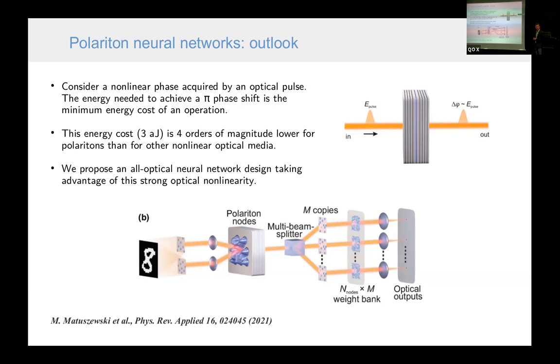Finally, I would like to say something about the outlook of polariton neural networks. To estimate what is the potential efficiency of the system, one can consider such a simple setup. We have an optical pulse with certain energy. It is going through microcavity and the polaritons provide some nonlinearity to this pulse. At the exit of the cavity, we have the same pulse, but there is some phase shift, which is dependent on the energy. This is a nonlinear effect. And if we can achieve a pi phase shift, it means that we can use this device to perform useful information. We can estimate that the energy cost, minimum energy cost, I mean, the energy of the optical pulse is about three attojoules, which is four orders of magnitude lower than for any other nonlinear optical materials.